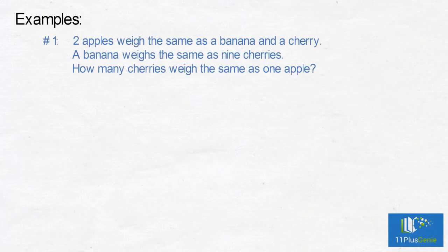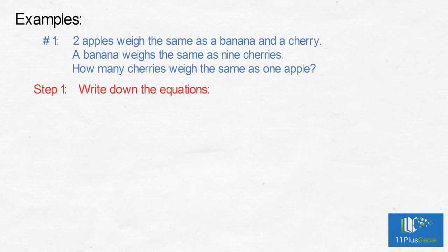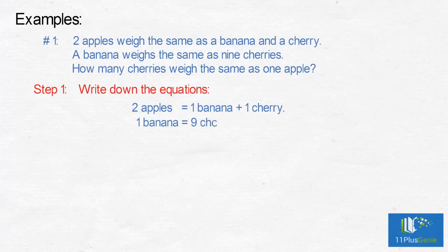Example 1. Two apples weigh the same as one banana and one cherry. A banana weighs the same as nine cherries. How many cherries weigh the same as one apple? The equations are: two apples equals one banana plus one cherry, and one banana equals nine cherries.